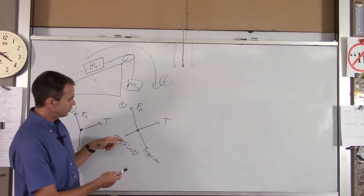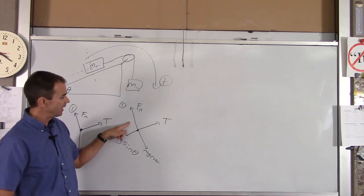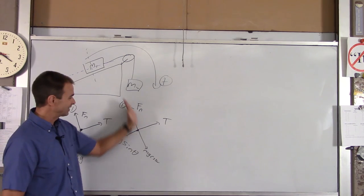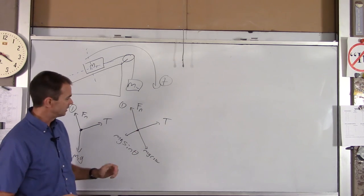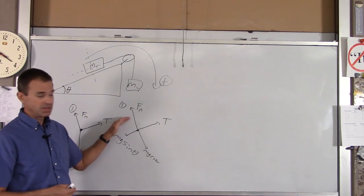Also notice, these two arrows are about the same size. Because the object is not accelerating perpendicular to the incline, these two forces, therefore, will be equal.